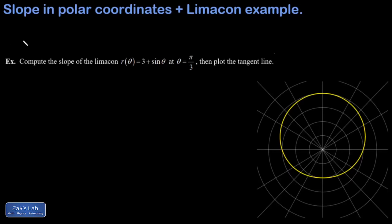In this video, we're going to derive a formula for the slope of a tangent line to a polar curve. Once we've got that done, we're going to apply our new formula to the limacon r of theta equals 3 plus sine theta, at the angle of theta equals pi over 3.